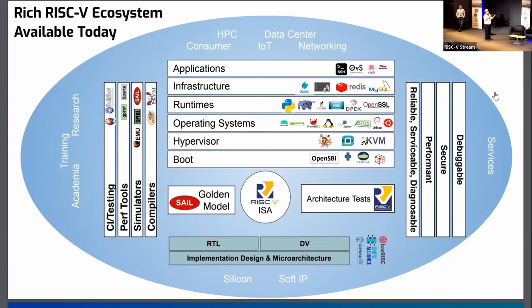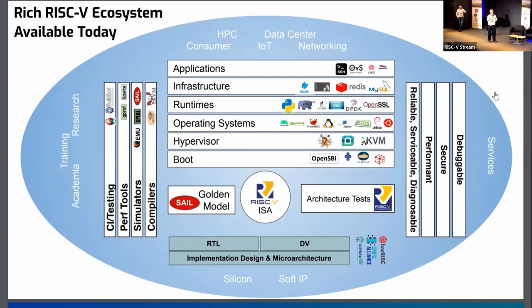On the right are attributes — things that everything needs to do. Things need to be debuggable, secure, performant, reliable, serviceable, and diagnosable. We work in a lot of the committees to make sure these pieces are in place and that the software ecosystem pieces that do these things are in place.